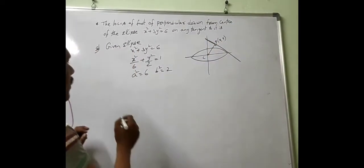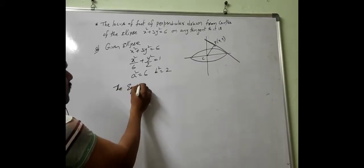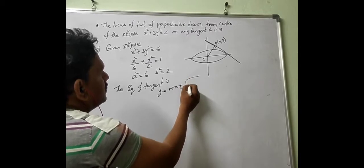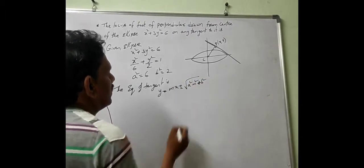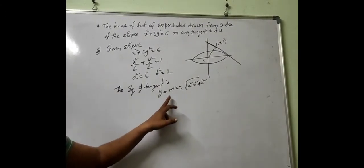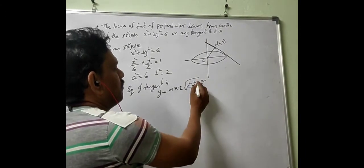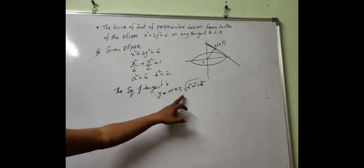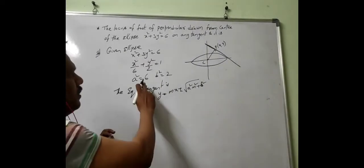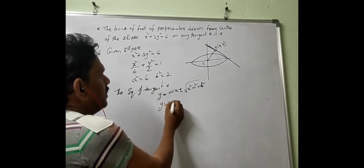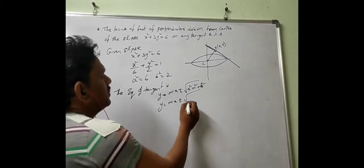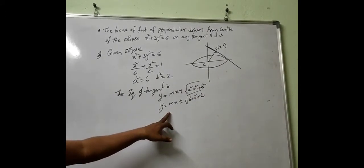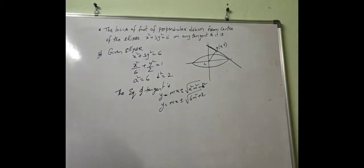If m is the slope of the tangent, the equation of tangent is y = mx ± √(a²m² + b²). Substituting the values of a² and b²: y = mx ± √(6m² + 2). So the equation of the tangent will be y = mx ± √(6m² + 2).